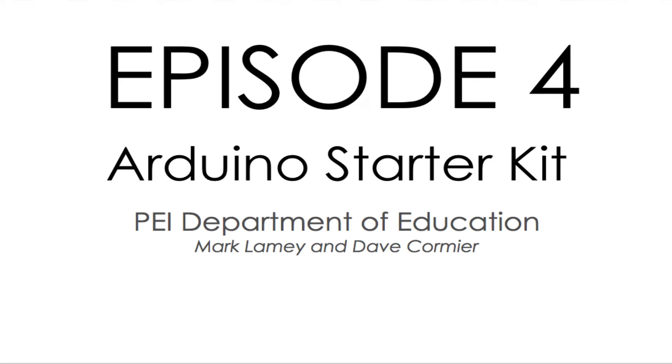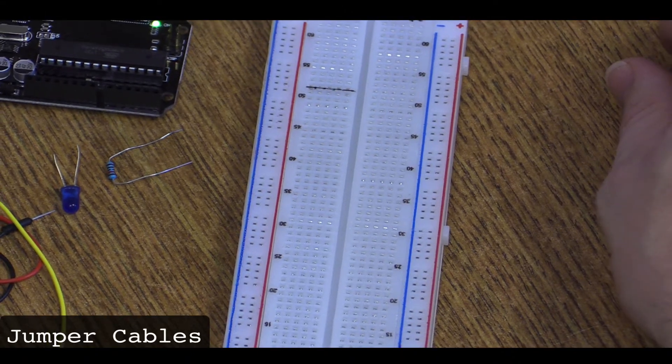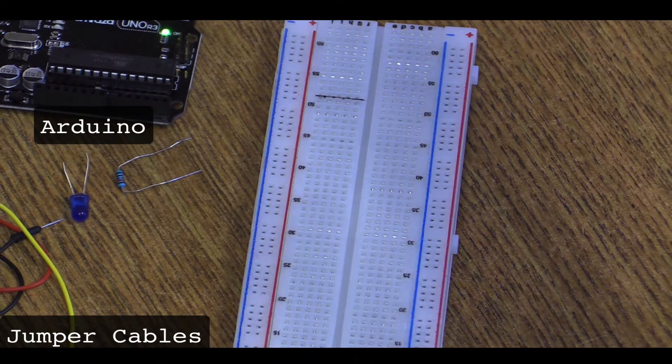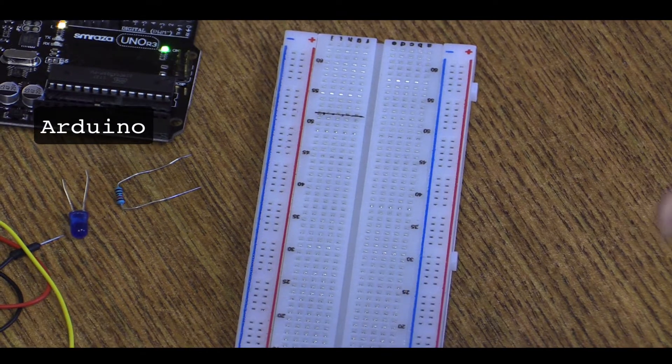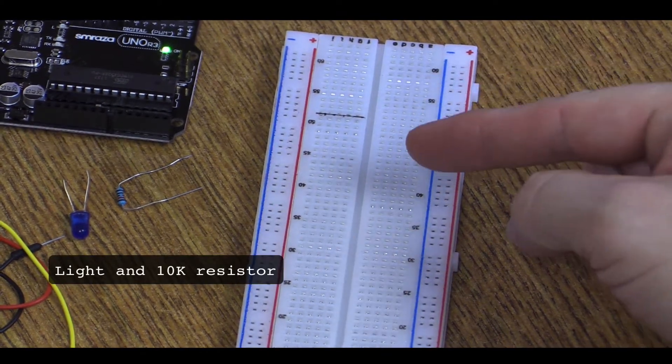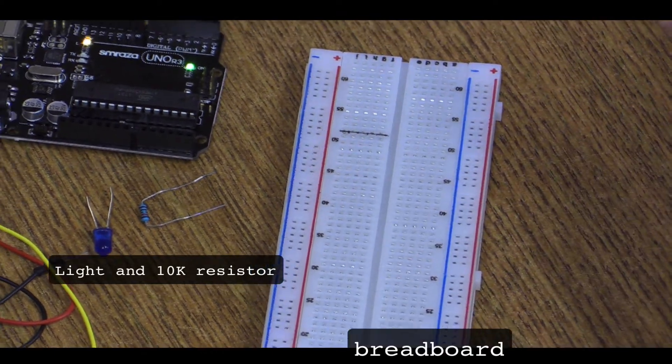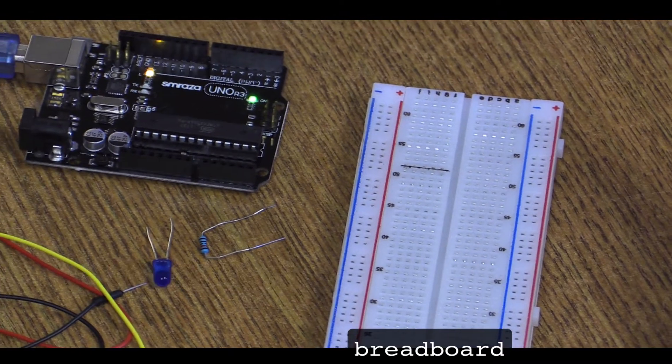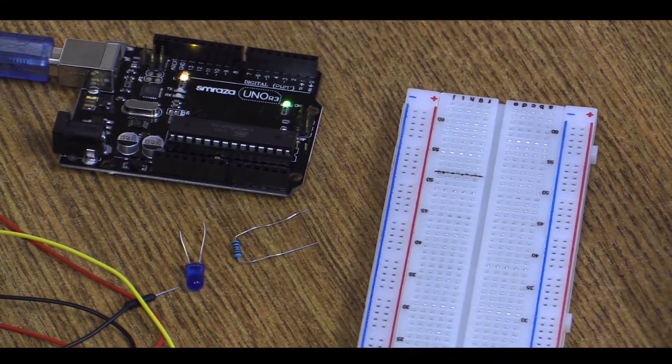Hello and welcome to the PEI Department of Education Arduino Starter Kit. This is Episode 4, and it combines Episode 2 and Episode 3 together so we can get a blinking light on our board. You could use this for a Morse code project or other applications. We're going to show how that works today.